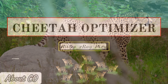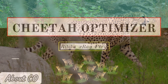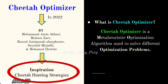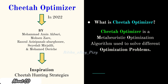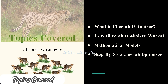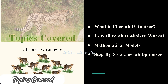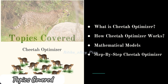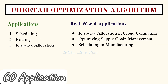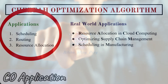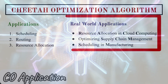This algorithm's performance is much better than others, so we can use it to solve a number of optimization problems. It was introduced in 2022, and the inspiration behind it is the hunting techniques used by cheetahs in real life. In this video we will discuss how the algorithm works, different mathematical models, and applications such as routing problems, scheduling problems, and resource allocation problems.